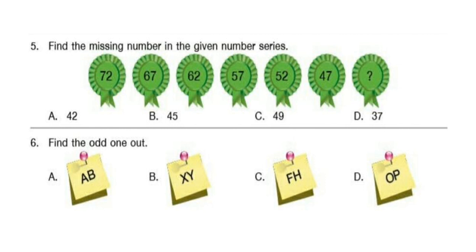Question 5. Find the missing number in the number series. The correct answer is option A: 42. Here each number is subtracted by 5, so 47 minus 5 gives 42.